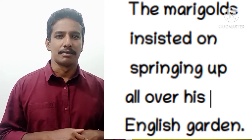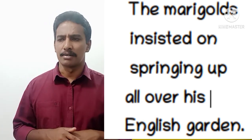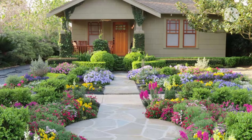Why did grandfather grumble at the Indian marigolds? The marigolds insisted on springing up all over his English garden. Look at the picture of an English garden. In an English garden, plants are planted in an arranged manner so that it may look beautiful. Indian marigolds scatter everywhere, so grandfather grumbles. Is it clear to you?